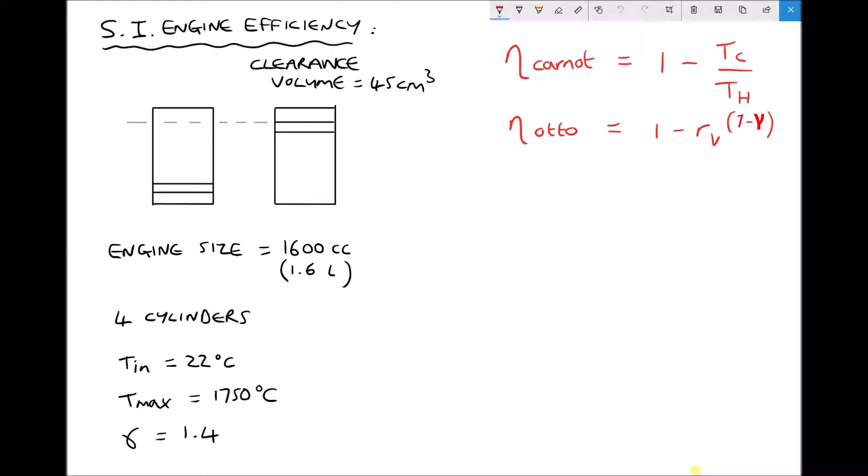In this video we're going to calculate the efficiency of spark ignition engines. We're going to calculate two different efficiencies: the Carnot efficiency, which assumes isothermal processes, and the Otto efficiency, which assumes adiabatic processes and heating at constant volume.